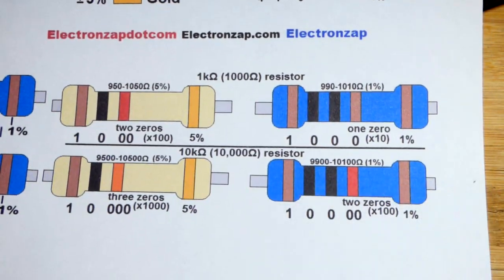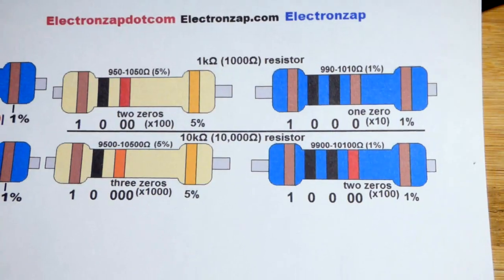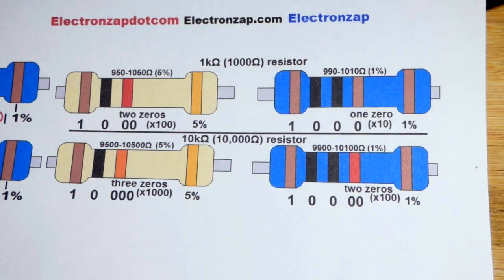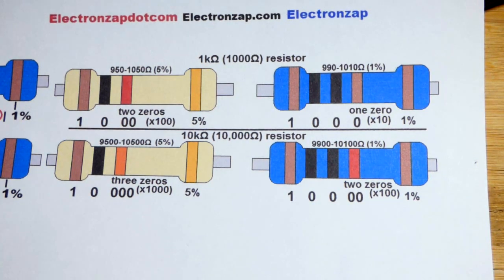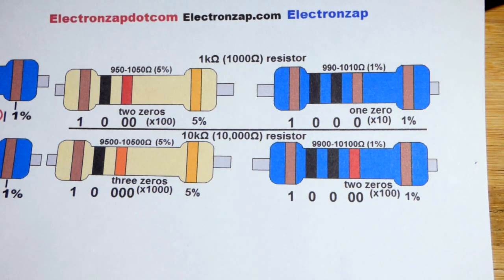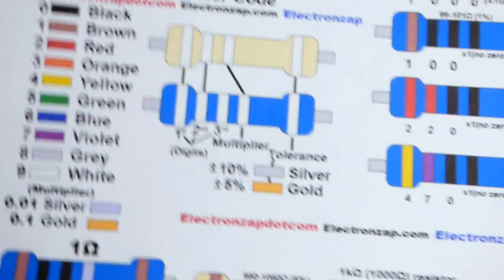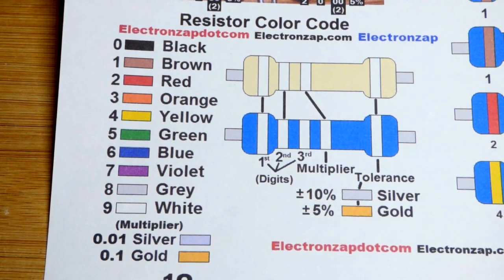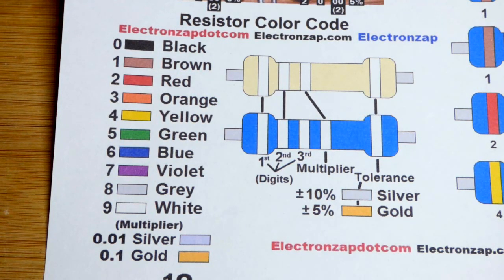The color code only tells you the resistance value plus its tolerance. It doesn't tell you the wattage. That's usually based on size. And unless you're really good at telling the size of resistors and their wattage, you kind of have to pay attention when you buy them and make sure you keep track of that. But in any case, here is the color code for a final look that I drew up. And I will post some other videos. Make sure you check those out. And I got links down in the description and whatnot. Check those out.